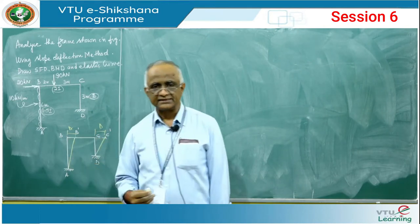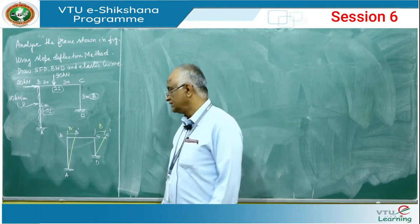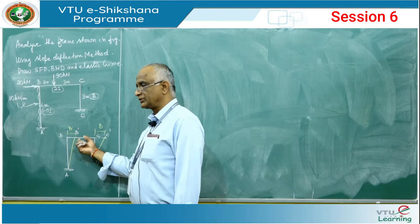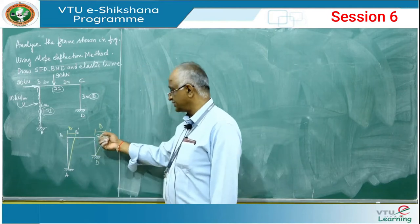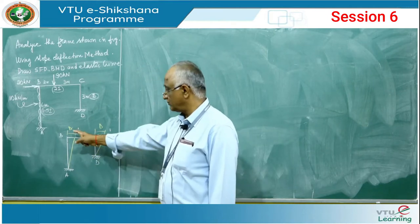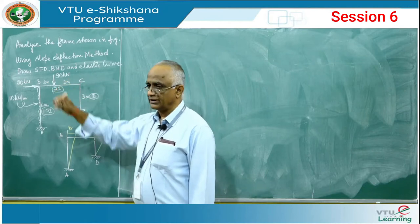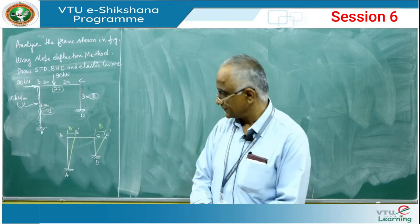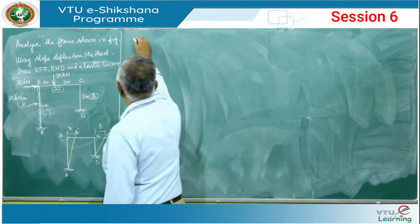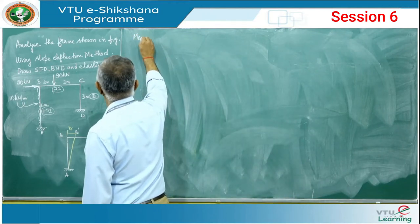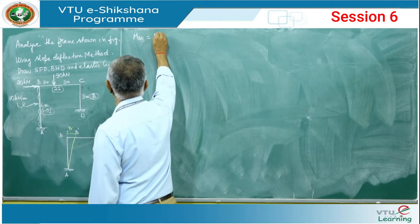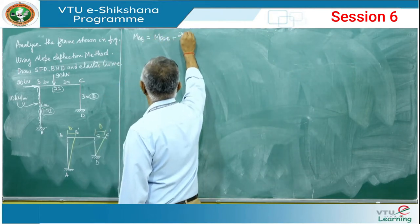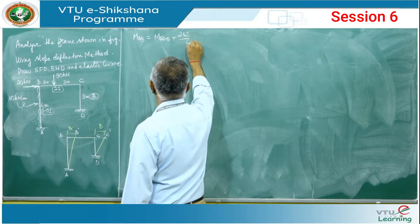Horizontal translation of member BC is neglected, so B moving to B-dash and C moving to C-dash represent the same delta. The three unknowns are theta_b, theta_c, and delta. We use the general slope deflection equation: M_AB = M_f_AB + (2EI/L)(2*theta_a + theta_b - 3*delta/L).